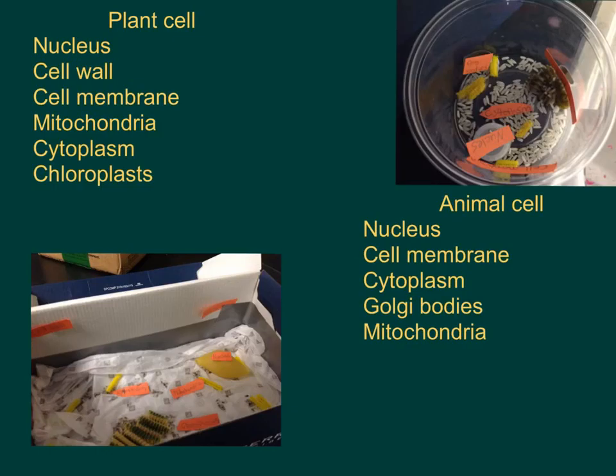The Golgi body serves the cell by sorting and packing molecules. The mitochondria does the same thing it does in a plant cell.